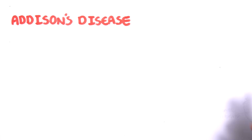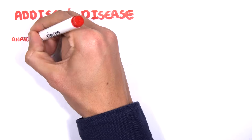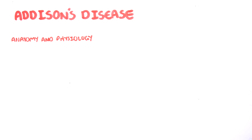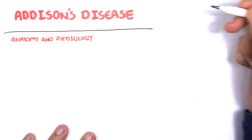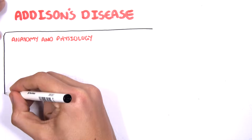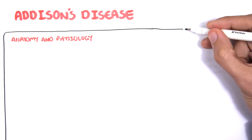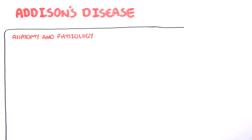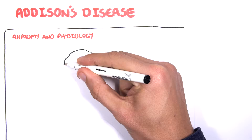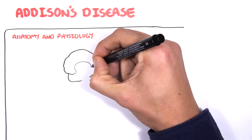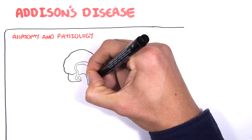However, Addison's disease is characterized by insufficiency of all the hormones produced by the adrenal cortex. Before going into Addison's disease, it's important to revise the anatomy and physiology of the endocrine system, more so focusing on the adrenal cortex and its hormones.